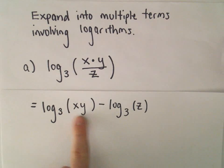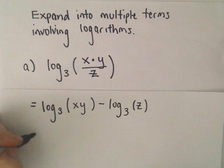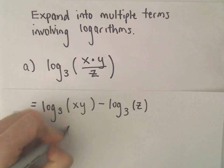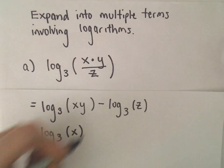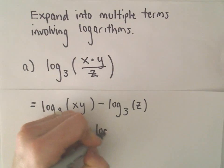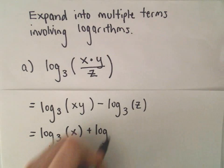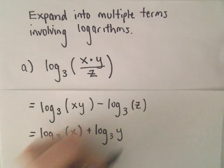Now, the next thing I can do - I've got multiplication. I can use the first property we had listed and break that multiplication up into addition. So we'll have log base 3 of x plus log base 3 of y.